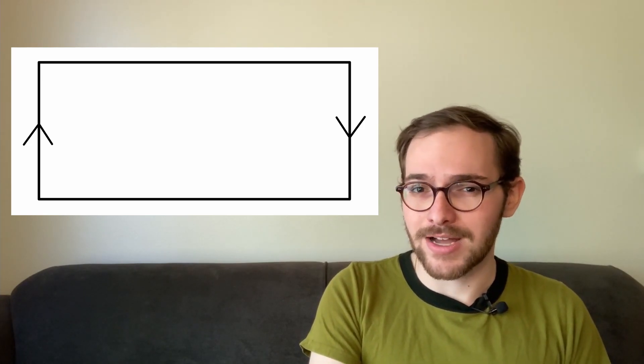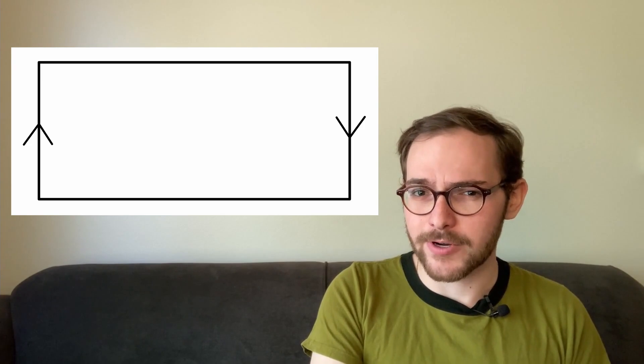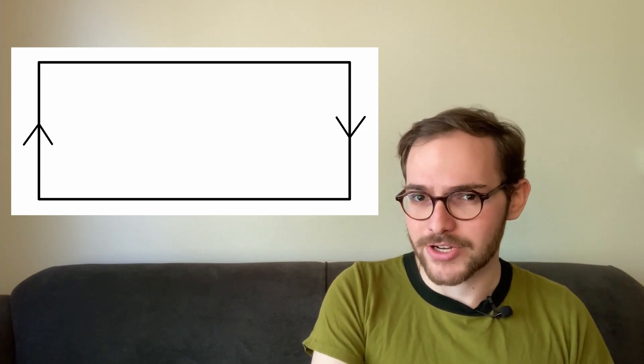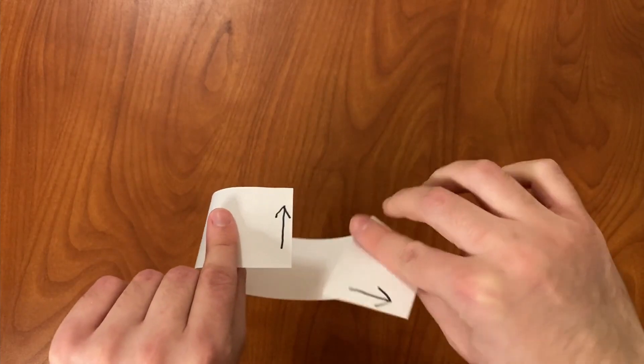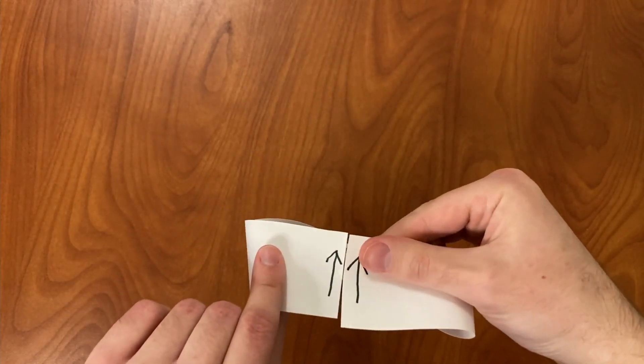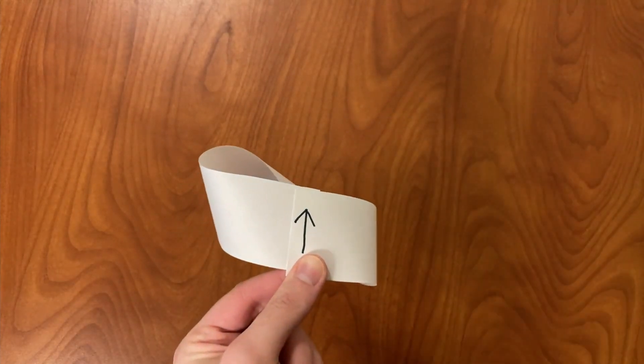We've drawn two arrows on either end of a strip of paper, but in opposite directions. This is to indicate that when we tape it together, we need to twist it so that the two arrows point in the same direction.